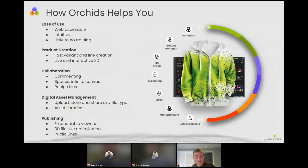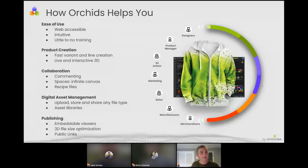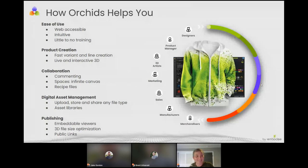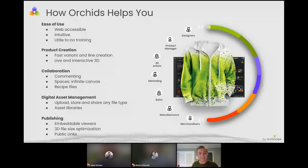Number two is product creation. We provide many tools that allow members to leverage 3D models and create beautiful product variants, product lines, and presentations all within the platform in live and interactive 3D. The third is collaboration. As a SaaS platform, tools like commenting are expected, but also spaces and recipe files play a role in keeping colleagues, customers, and factories all in sync and helps teams work better and faster together.